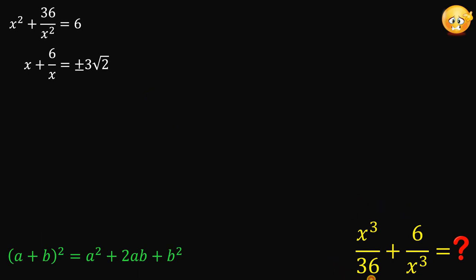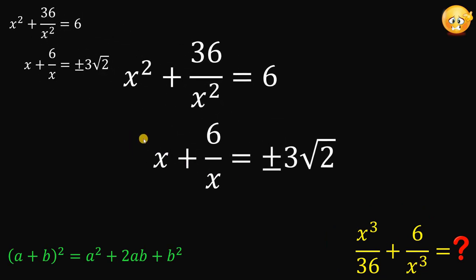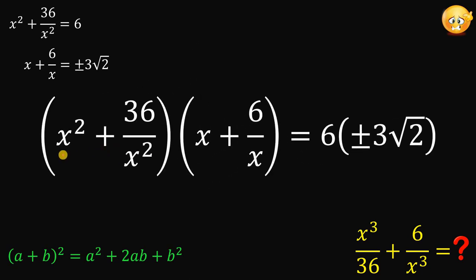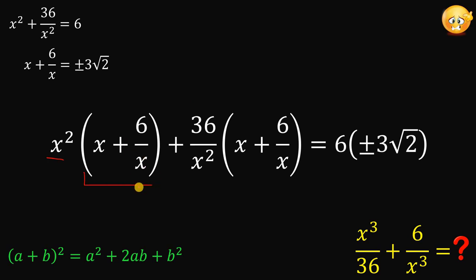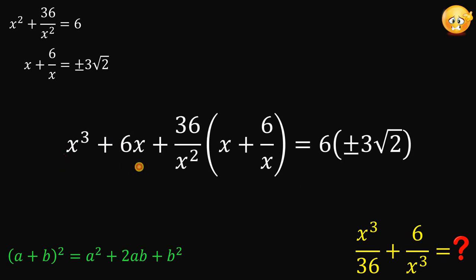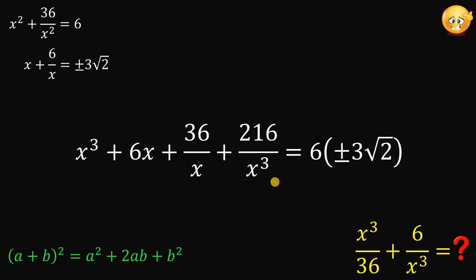Our goal is to find x cubed over 36 plus 6 over x cubed. Let's multiply the two equations together using chunk multiplication: x squared multiplied by the whole chunk of x plus 6 over x, and 36 over x squared multiplied by the whole chunk of x plus 6 over x. Distributing x squared gives x cubed plus 6x. Distributing 36 over x squared gives 36 over x plus 216 over x cubed.